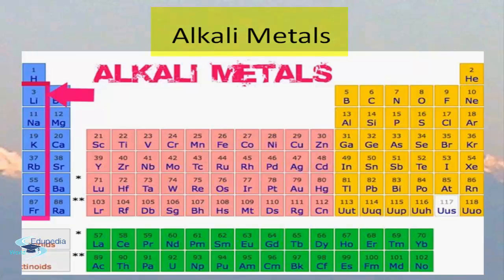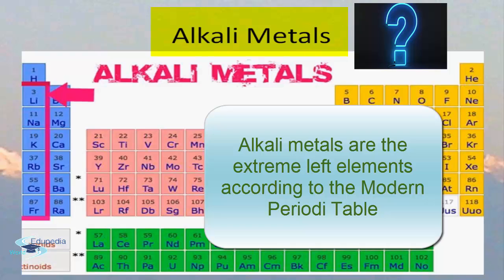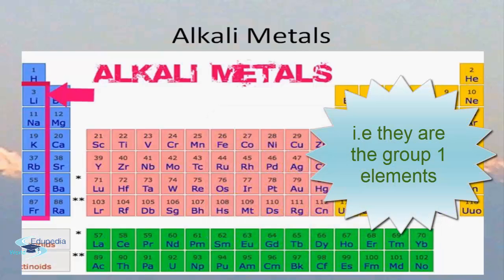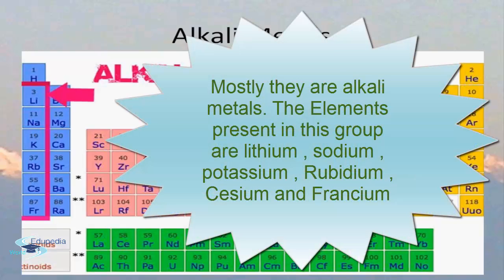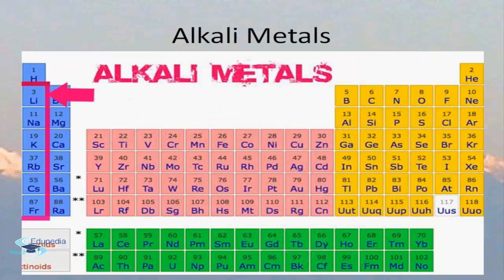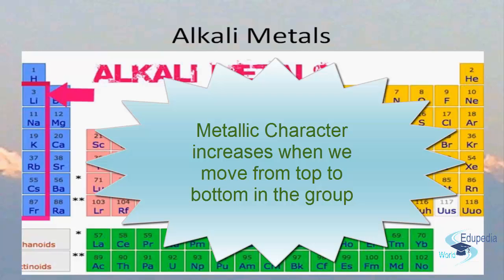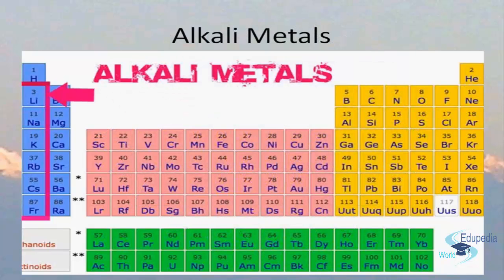Before starting the discussion, let's revise the alkali metals. Alkali metals are the extreme left elements in the modern periodic table — they are the group one elements. The elements present in this group are lithium, sodium, potassium, rubidium, cesium, and francium. The metallic character and reactivity both increase when we move from top to bottom in the group.